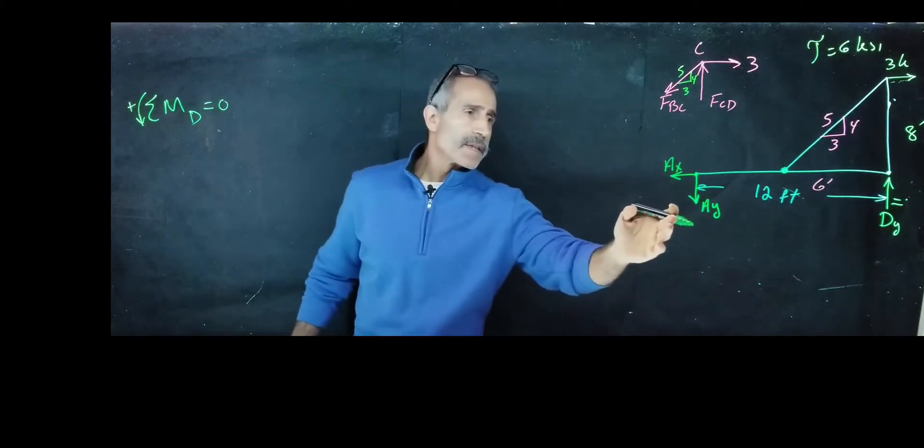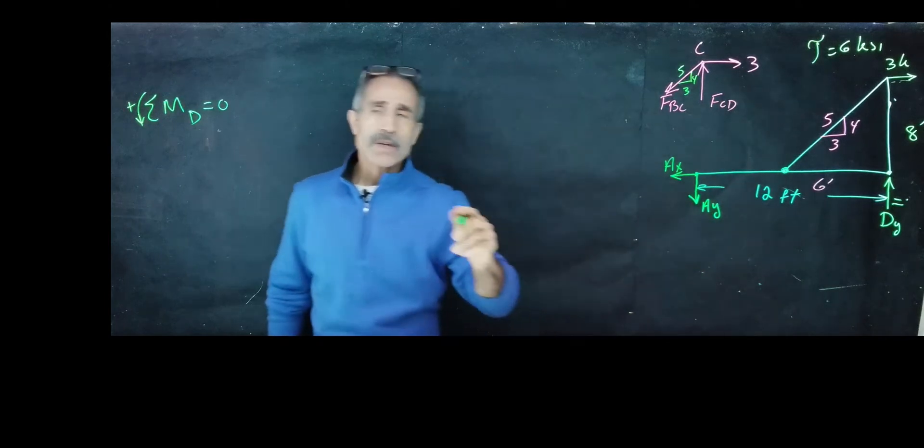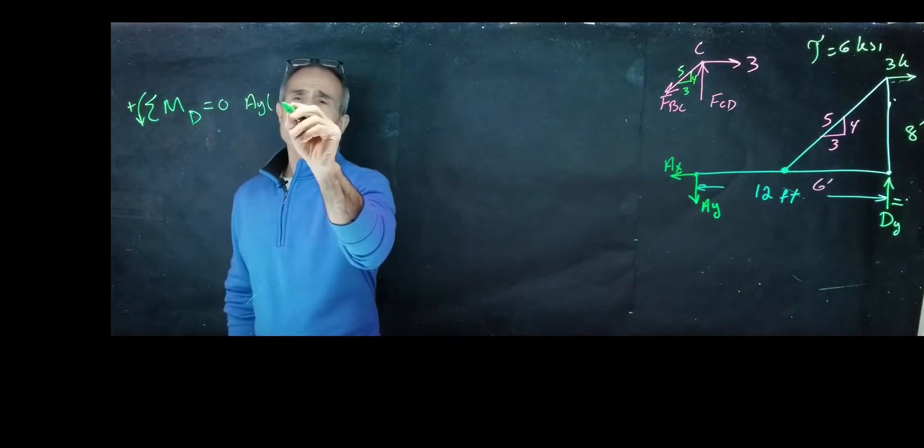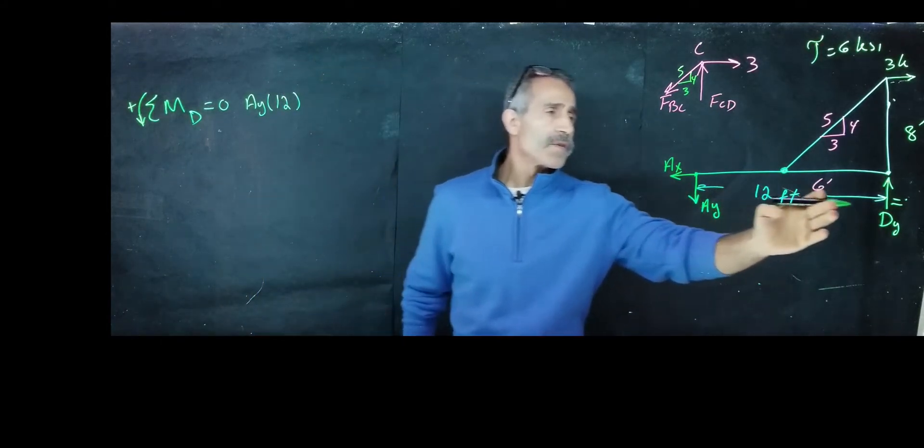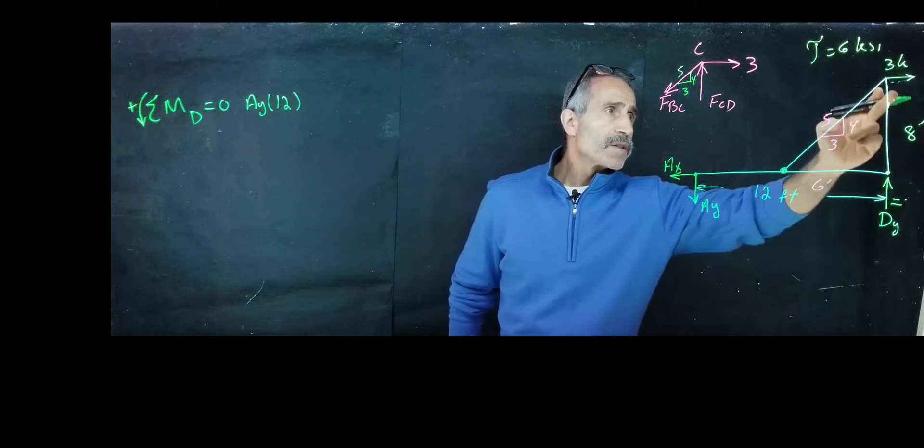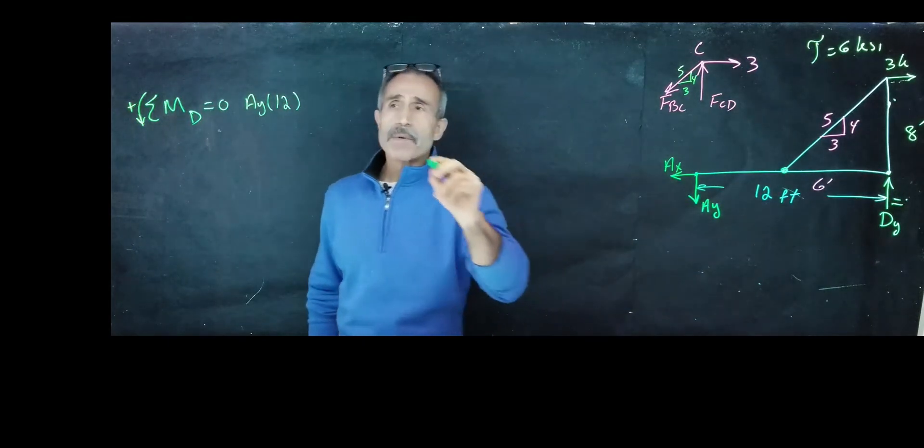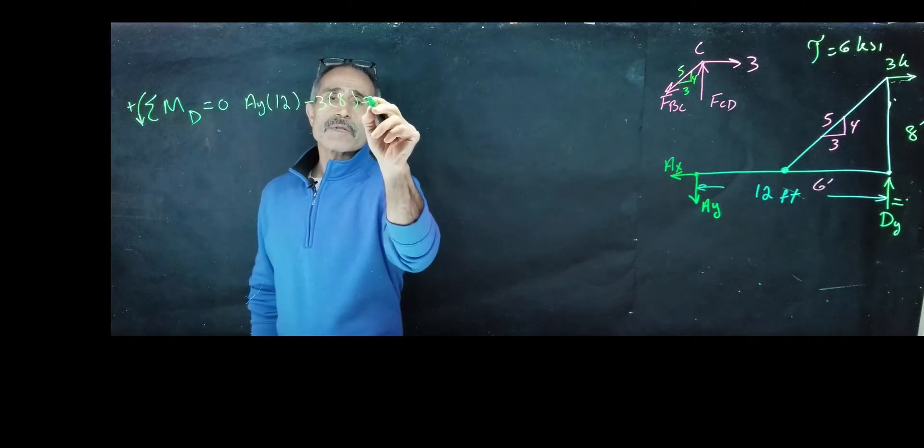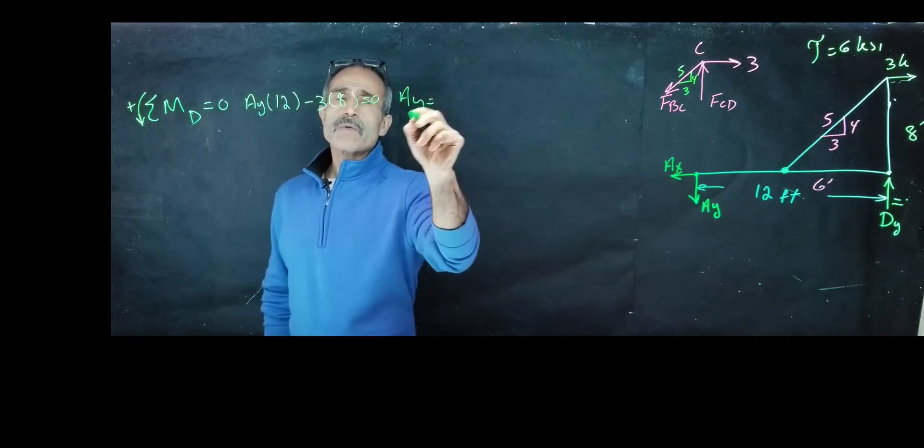I'm going to start from this end, and this force is going to rotate about point D counterclockwise, so I consider positive Ay times 12. And then there's nothing here until I get over here. This cannot take a moment about itself. It's in the same spot, so this can take a moment about this point, and that's going to be clockwise, so it's negative. It's going to be minus 3 times 8 equals zero, and therefore Ay comes out to 2 kips.